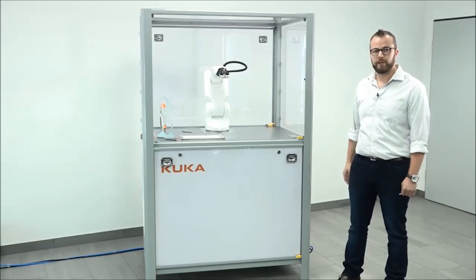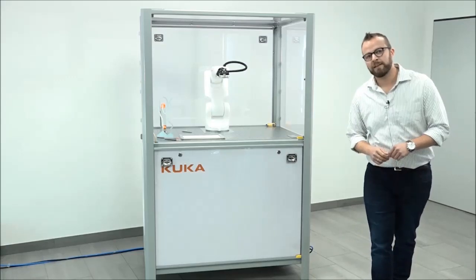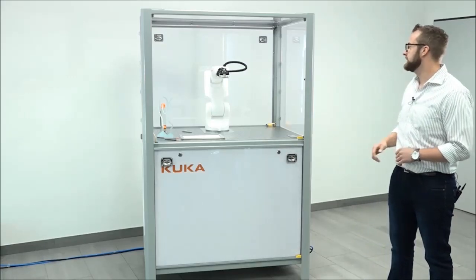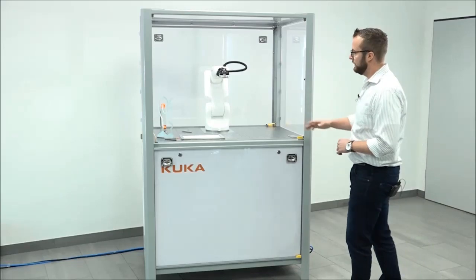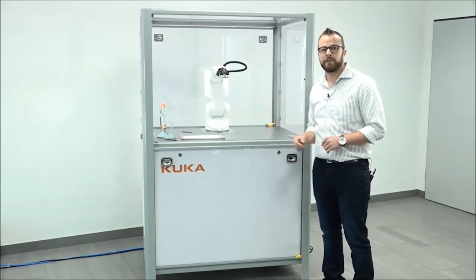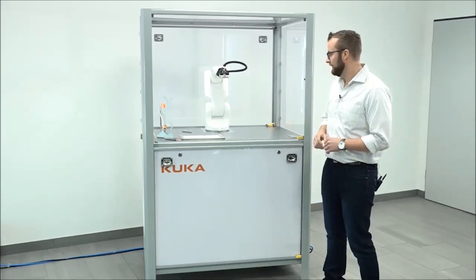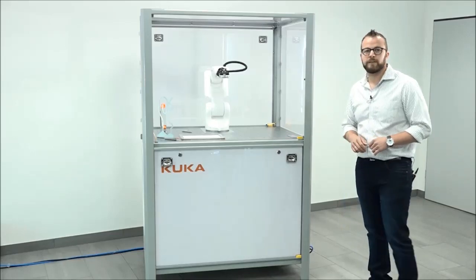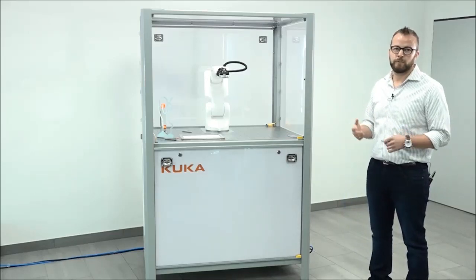For the cell itself, we have the robot cell developed in the new corporate design. We have the KR3 integrated. We have a special education application developed for the KR3 and in the cell integrated is all electrical equipment for the safe use of the robot.